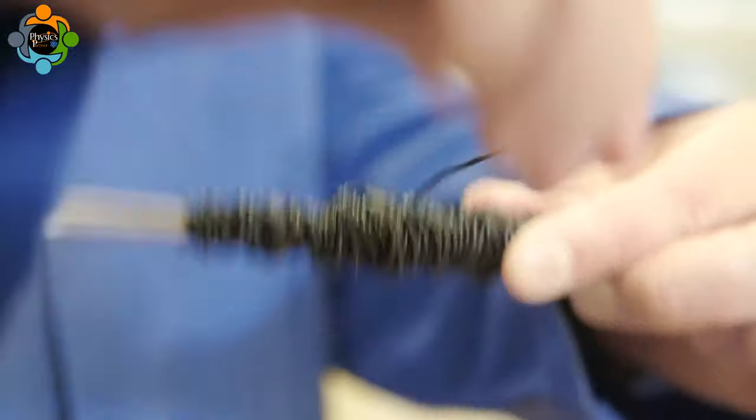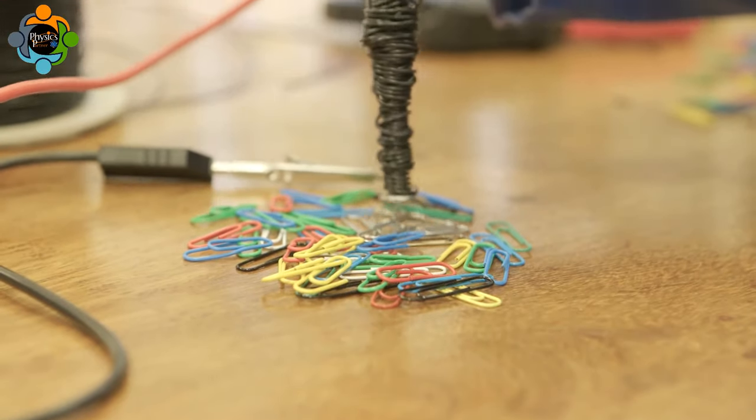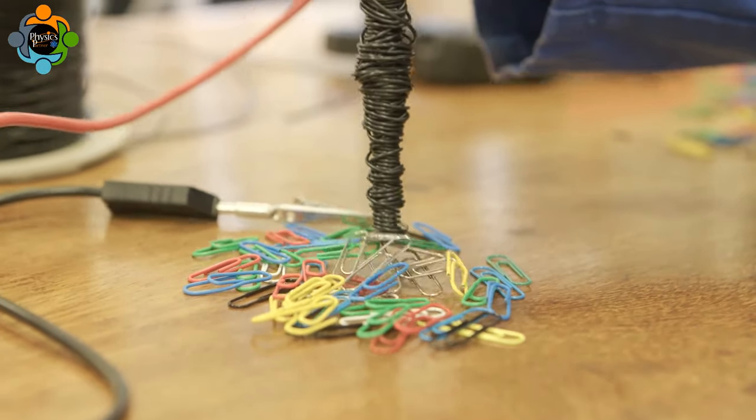Fifty more turns of wire are added to the rod. The effect of this is measured by picking up and then counting the number of paper clips collected.